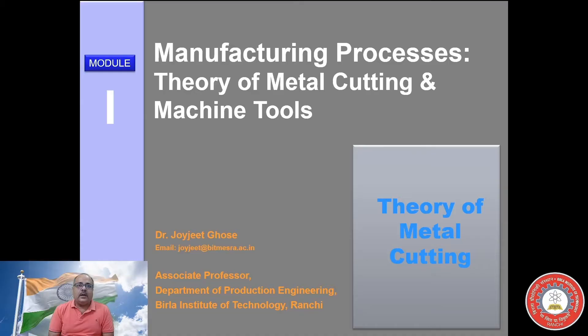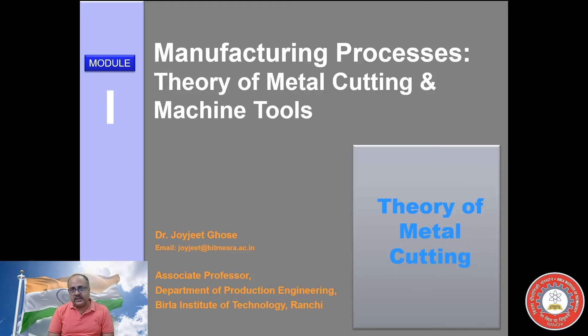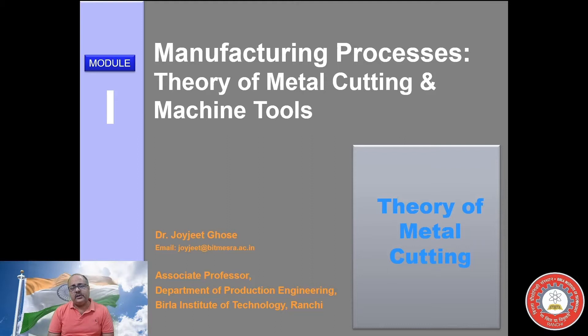Welcome to PH101 Manufacturing Process 2. This subject deals with metal cutting, machine tools, and related aspects. In the first two modules we will be discussing the theory of metal cutting. The second module covers machine tools like lathe machines, capstan machine, and turret machine. The third and fourth modules deal with shaper, planer, slotter, drilling machine, milling, indexing, and grinding. The fifth module deals with non-conventional machining processes.